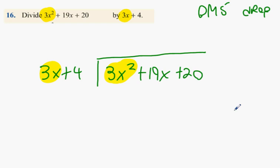What I'm going to ask you guys is, what is 3x squared divided by 3x? X. That's step 1 done. Division is now complete for the first round.